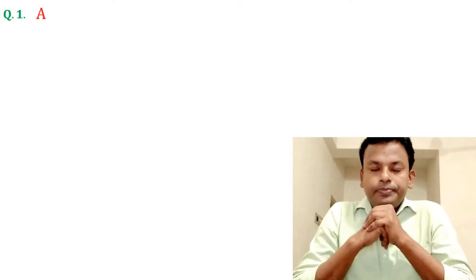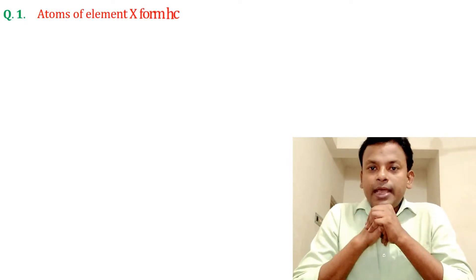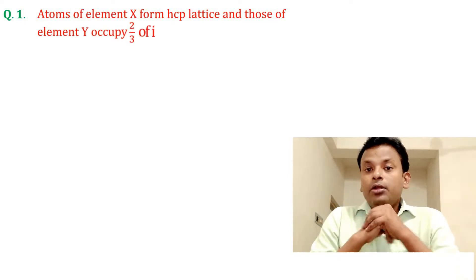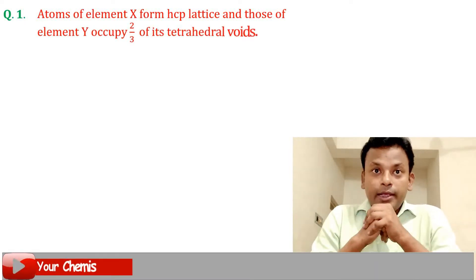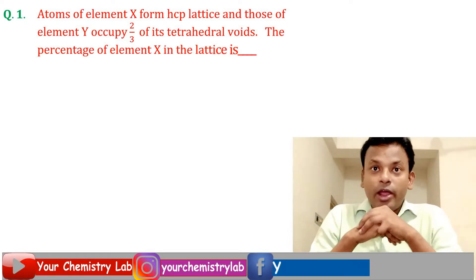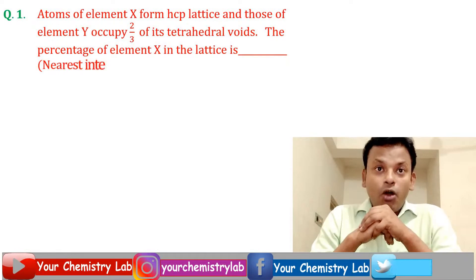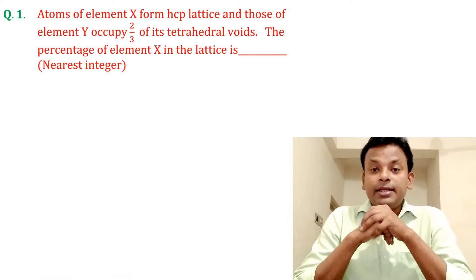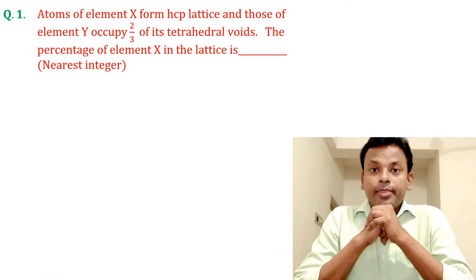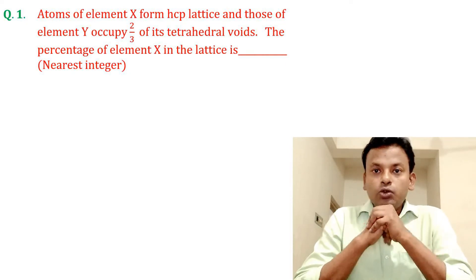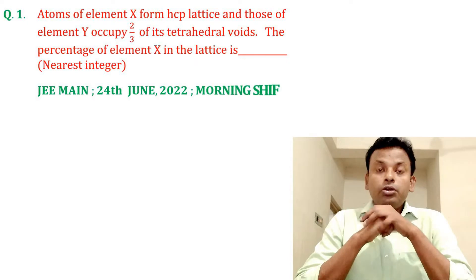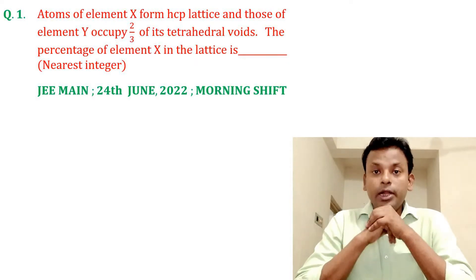Question 1. Atoms of element X form an HCP lattice and those of element Y occupy 2/3 of its tetrahedral voids. The percentage of element X in the lattice is — (nearest integer). This question was set in JEE Main 24th June 2022 morning shift.